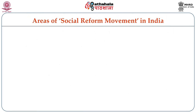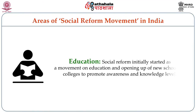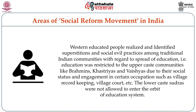Now I shall explain the areas of social reform movement in India, explained in different areas like education, education for women, improvement for women, casteism, etc. Social reform initially started as a movement on education and opening up of new schools or colleges to promote awareness and knowledge. Western educated people identified superstitions and social evil practices among traditional Indian communities. Education was restricted to upper caste communities like Brahmins, Kshatriyas and Vaishyas due to their social status and engagement in certain occupations such as village record keeping and village courts. The lower caste Shudras were not allowed to enter the orbit of the education system.